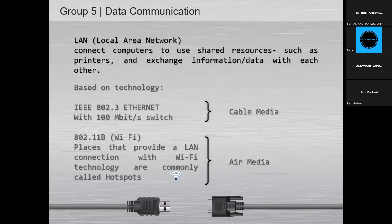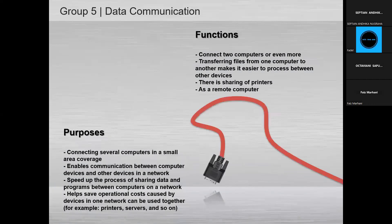For air media, IEEE 802.11b WiFi — places that provide a LAN connection with WiFi technology are commonly connected. Next, over to Octaviani.